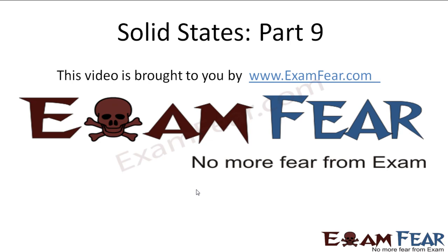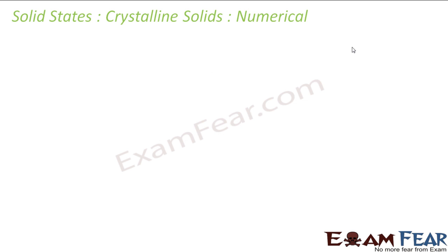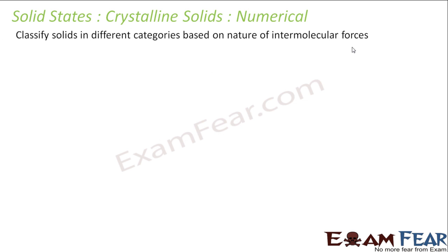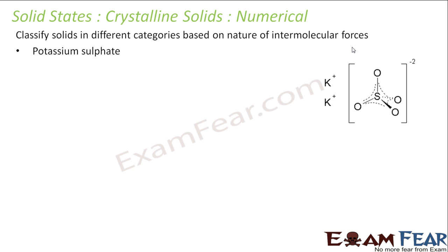This video on solid states part 9 is brought to you by examclear.com. Let's take some numericals. Classify the solids based on their intramolecular force. Potassium sulfate has K⁺ and SO₄²⁻ — positive and negative charges, just like Na⁺ Cl⁻ — so these are ions, making it an ionic solid.